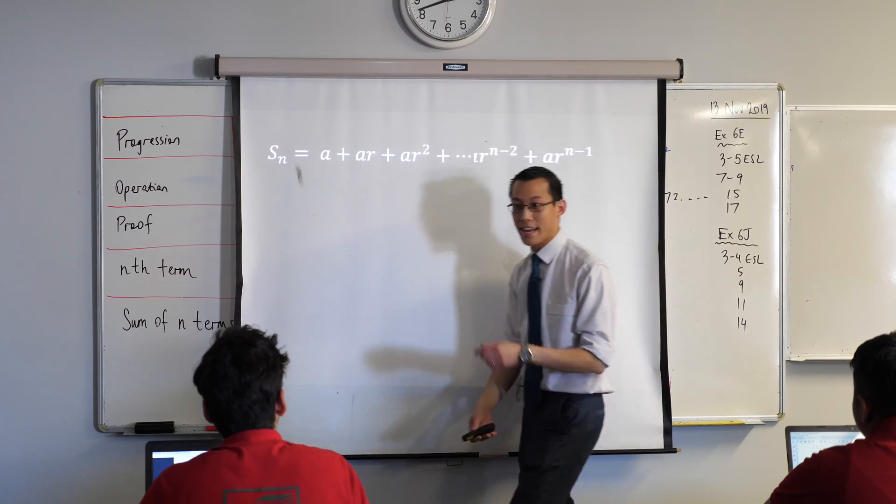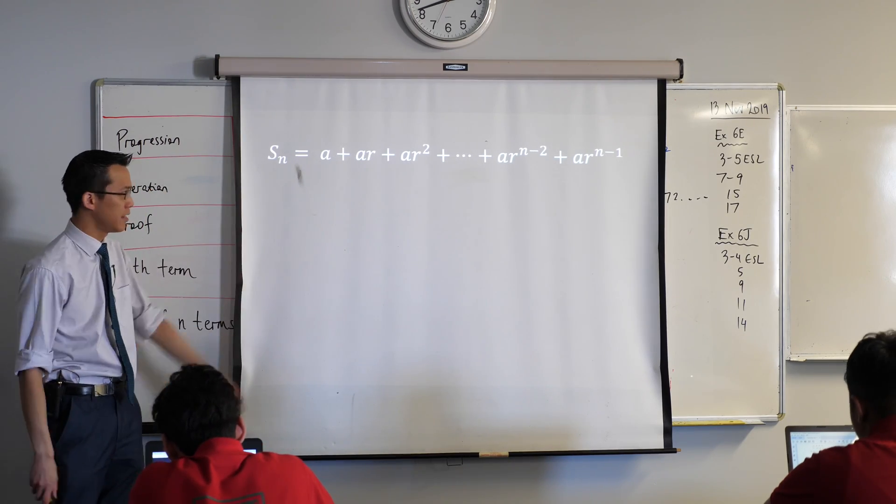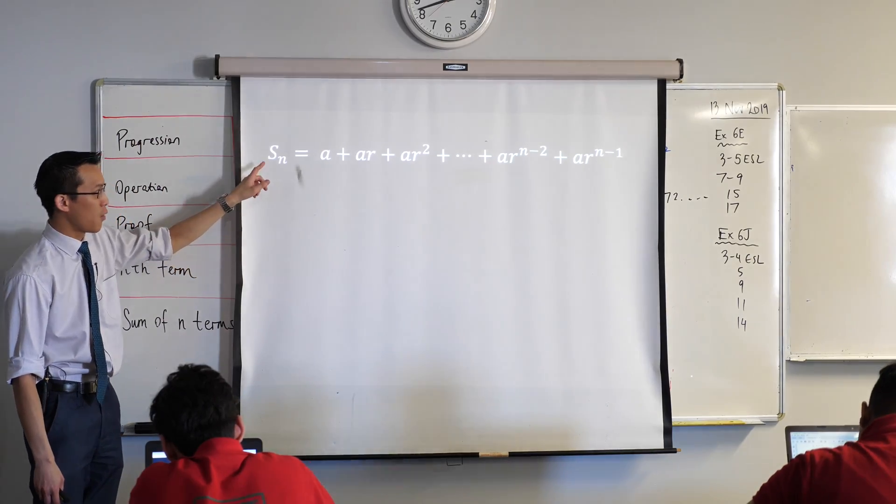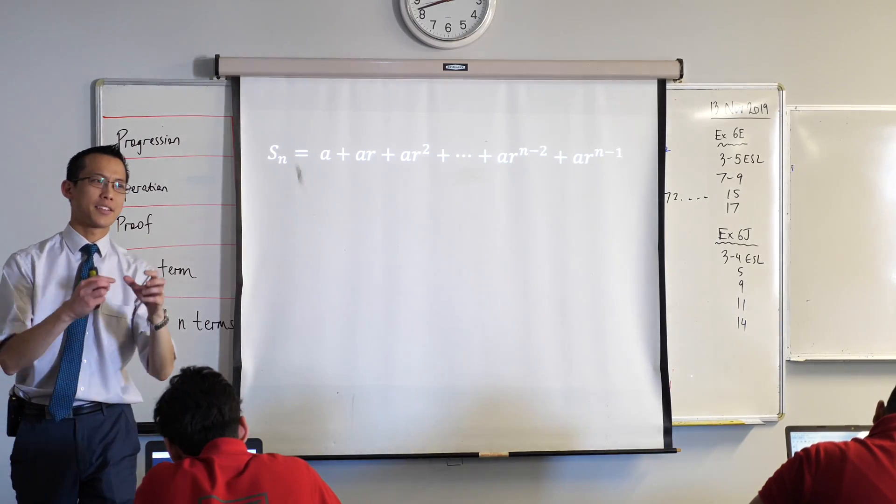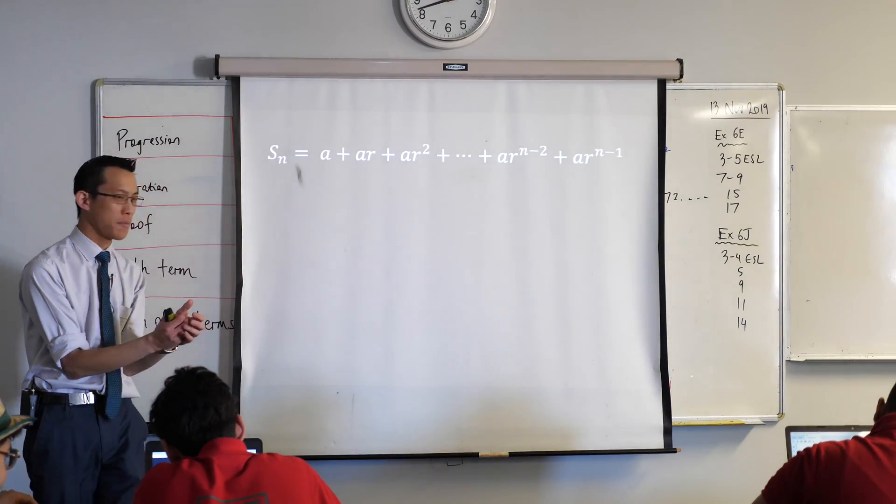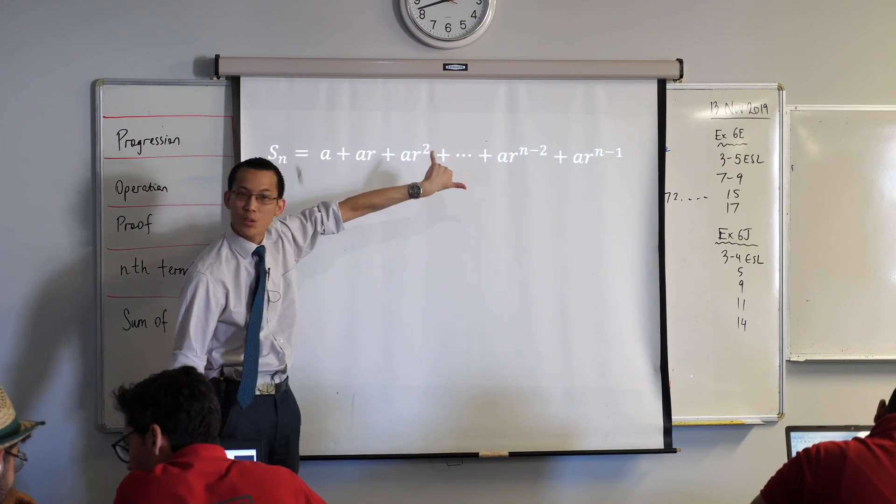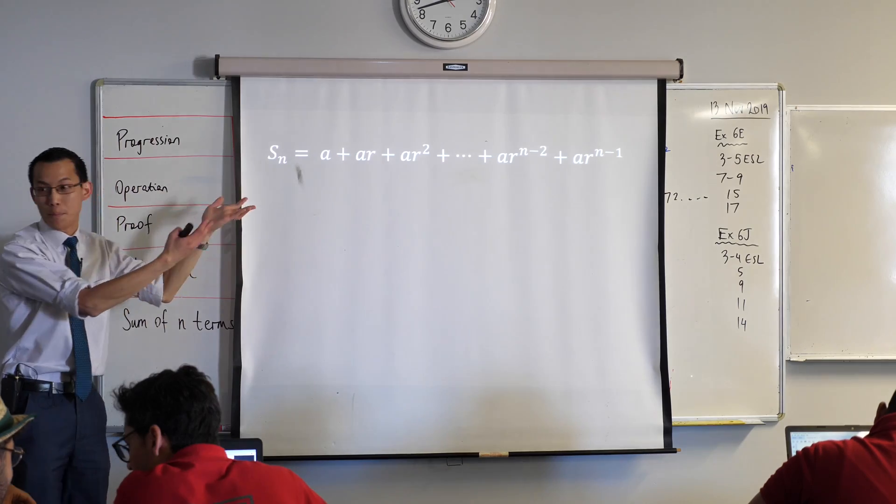There is an n minus 2 hiding there, I just chose to include it in the dot dot dot. You want to have this on your next line now. What I want to do with this line which is your second line of working is I want to make it so I can collapse this together. I want to be able to simplify things out.